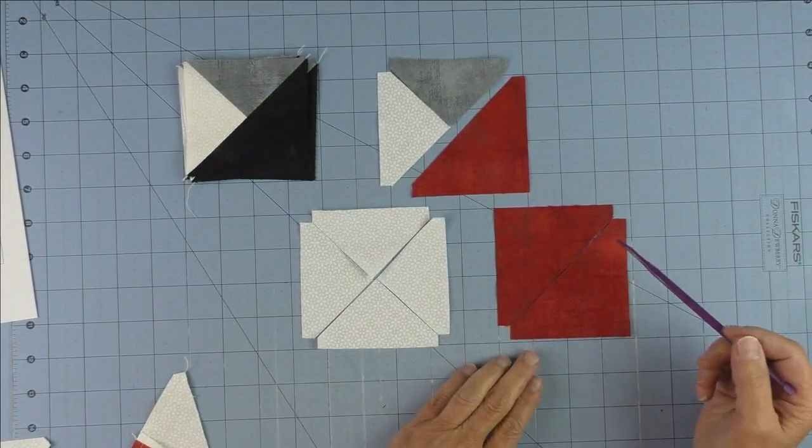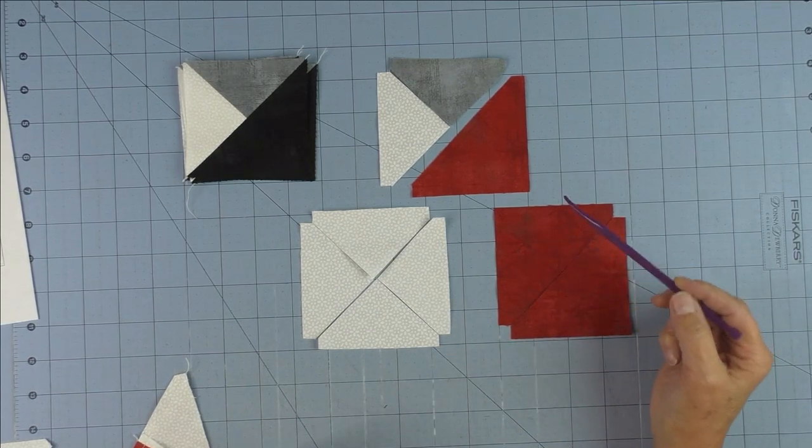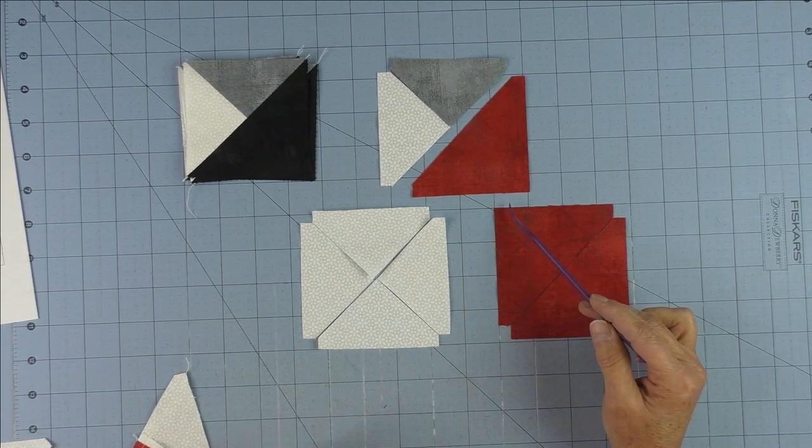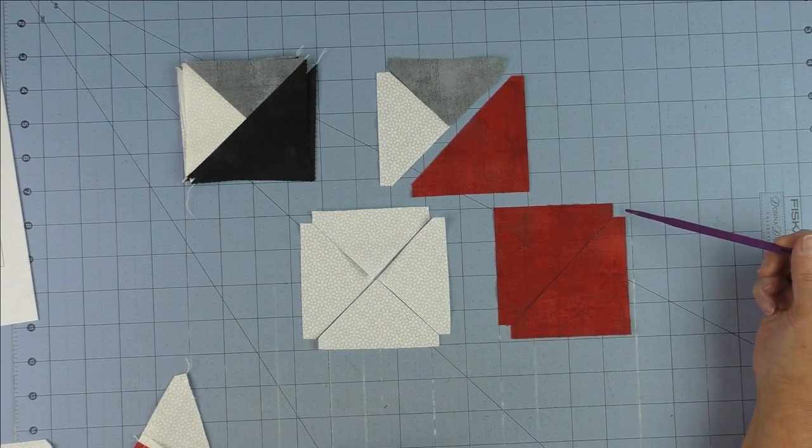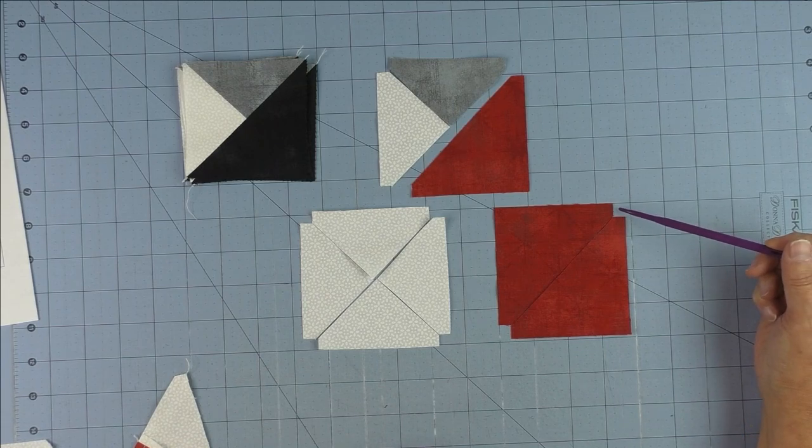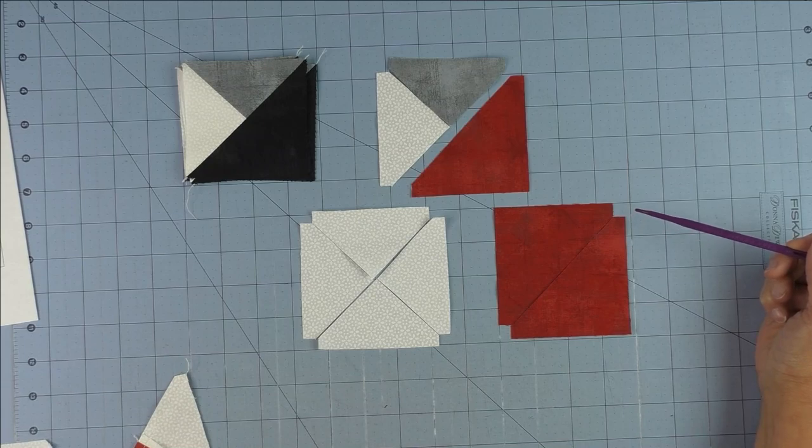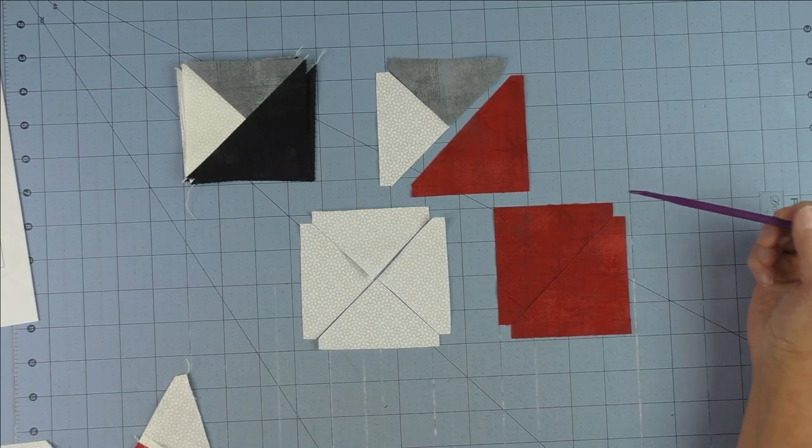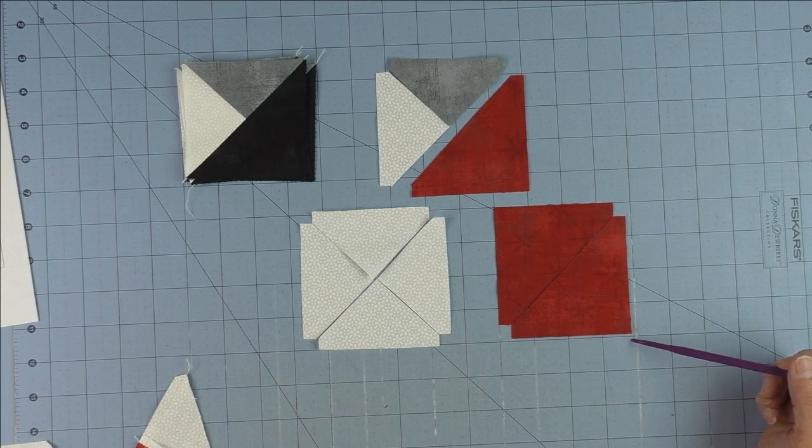We'll start with the half square triangle because we're mostly familiar with that. This measures three and seven-eighths. I cut this with the AccuQuilt, so that's why these corners are cut off—so you don't have any points to cut off once you sew it. If this were square, it would be three and seven-eighths by three and seven-eighths.